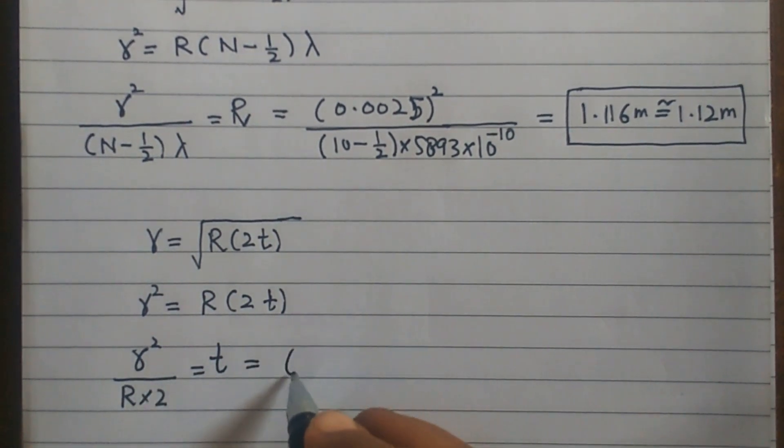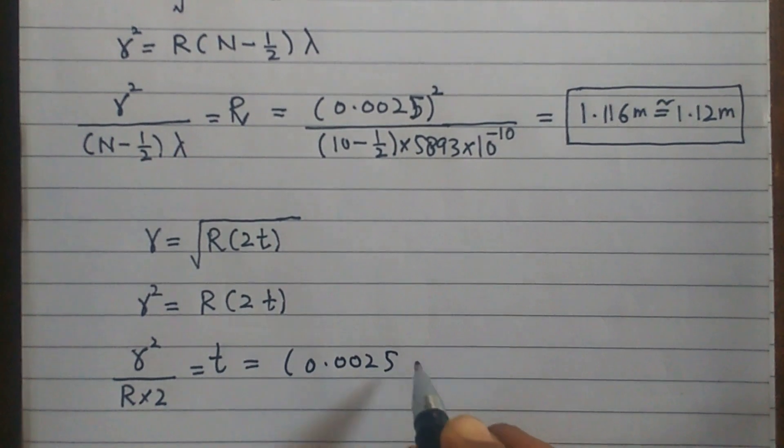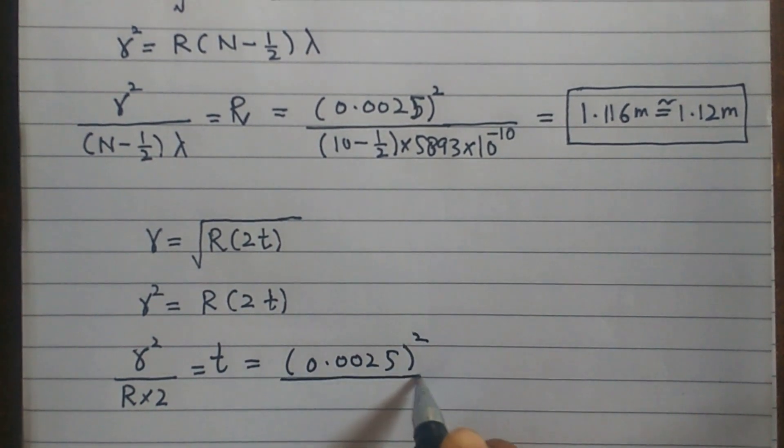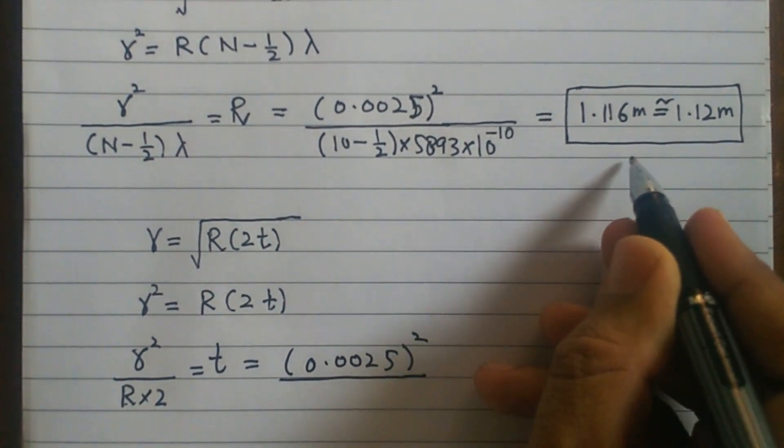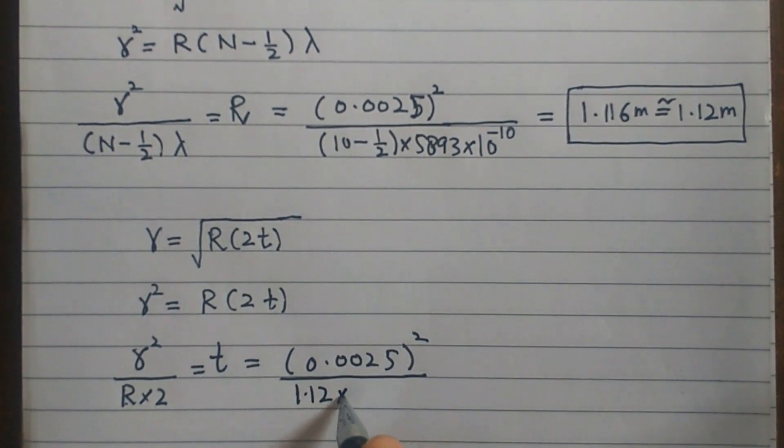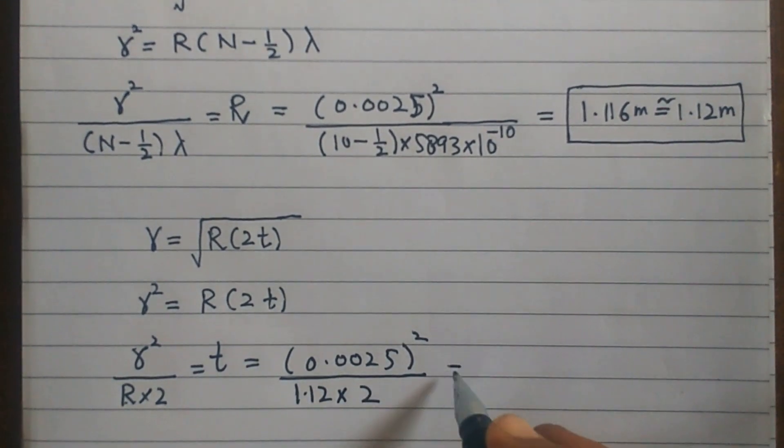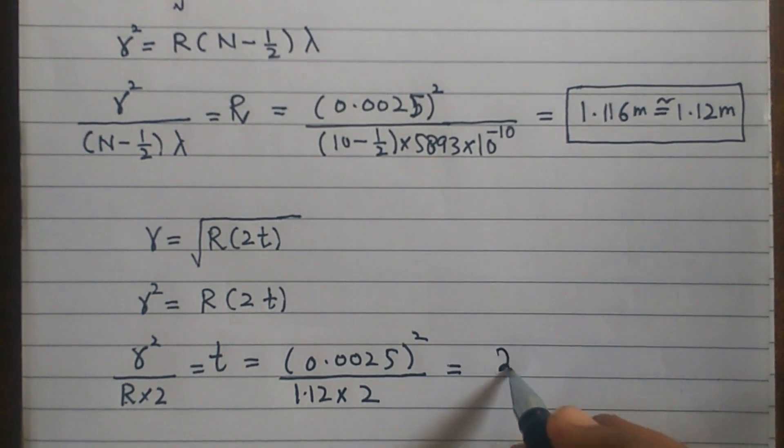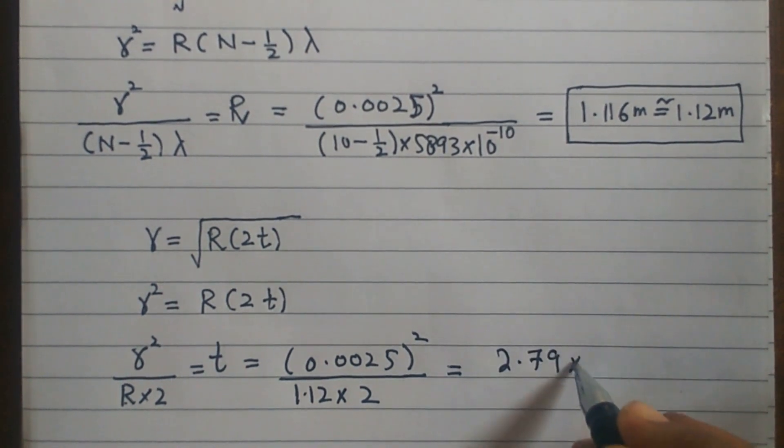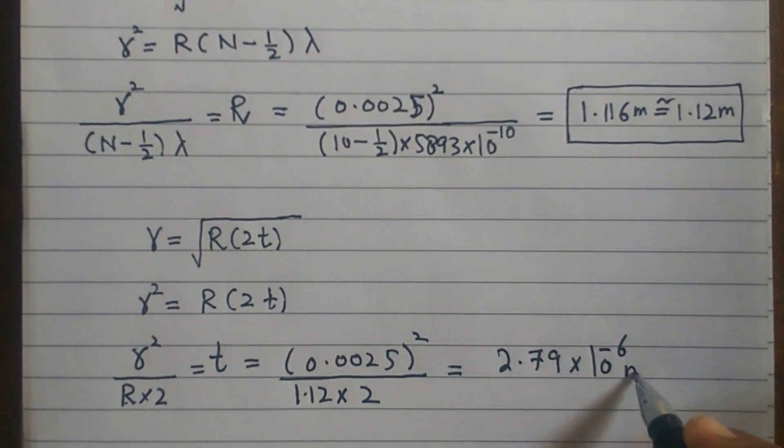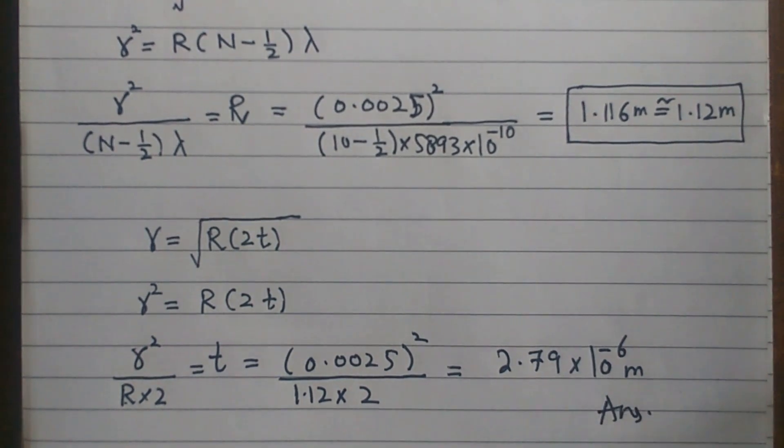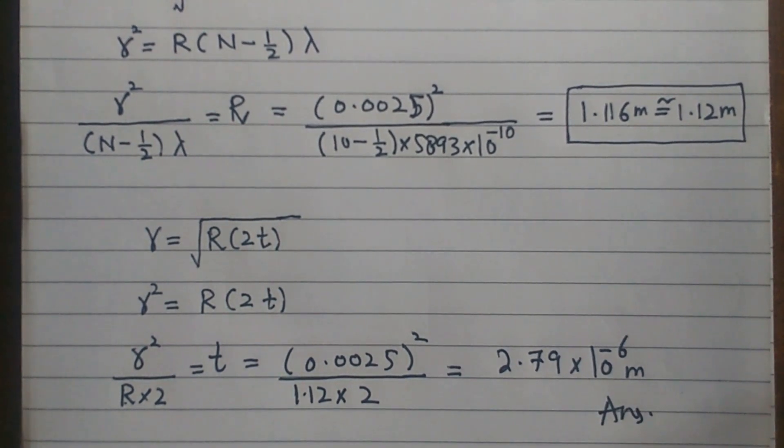We already know that it is 0.0025, and apply square on it. Divided by R, we already know R is 1.12 multiplied by 2. So when we solve this whole thing, the answer will be 2.79 exponent minus 6 meters. So this is our answer. This numerical will be solved.